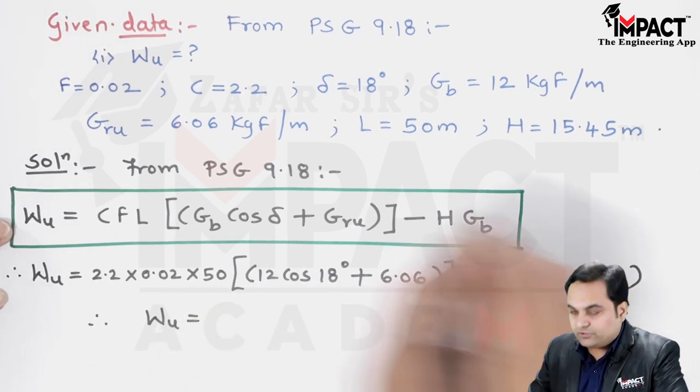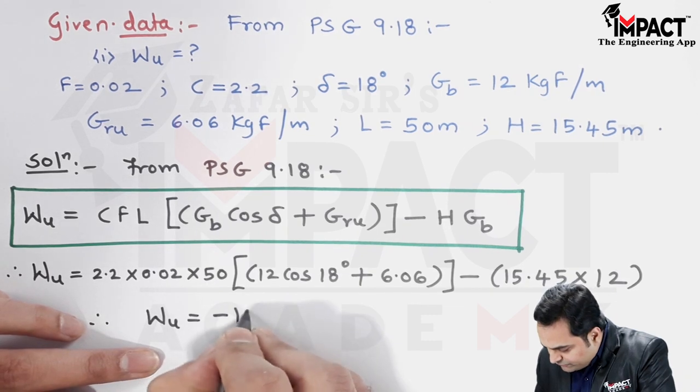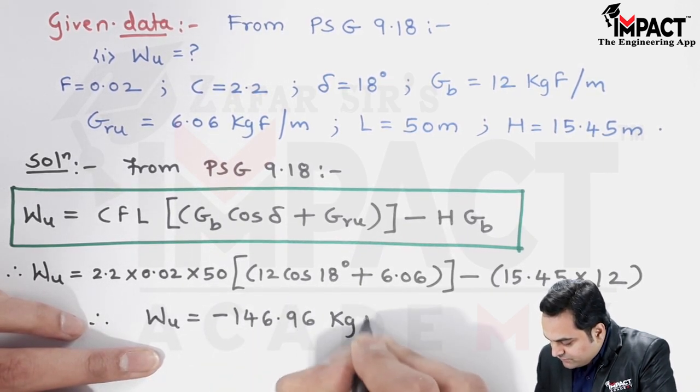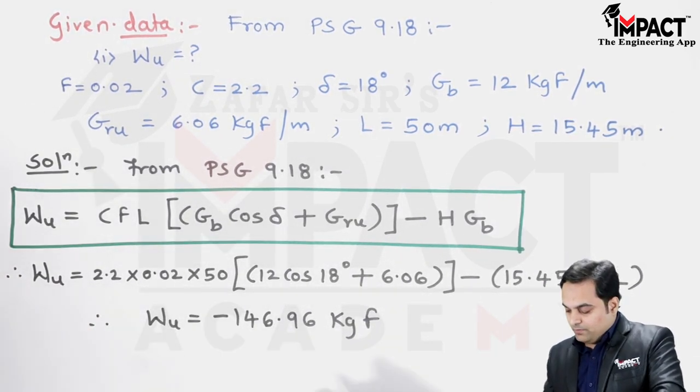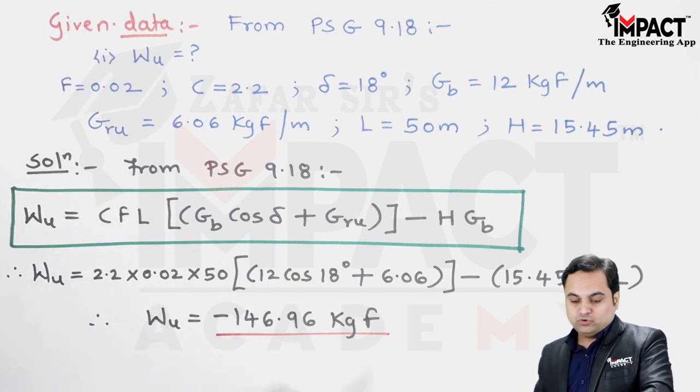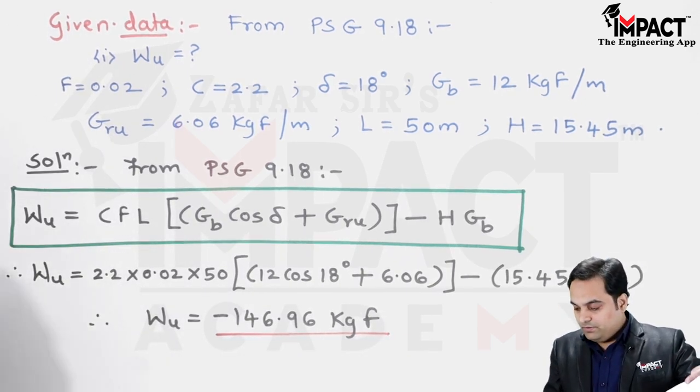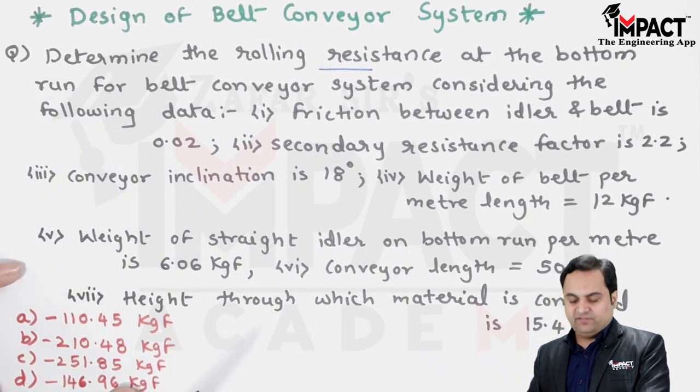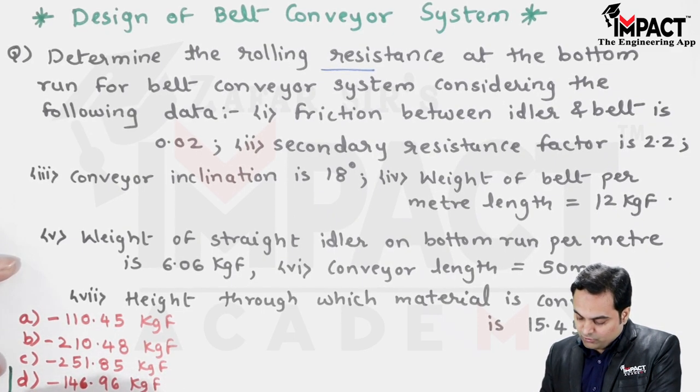Therefore, on calculating this, I am getting the answer of W suffix u which is minus 146.96 kgf. That is the weight or resistance on the bottom run of the belt. When we see the options which are given to us, option D is having a value of minus 146.96, so our answer is D. I'll just make a box which will highlight the correct answer.